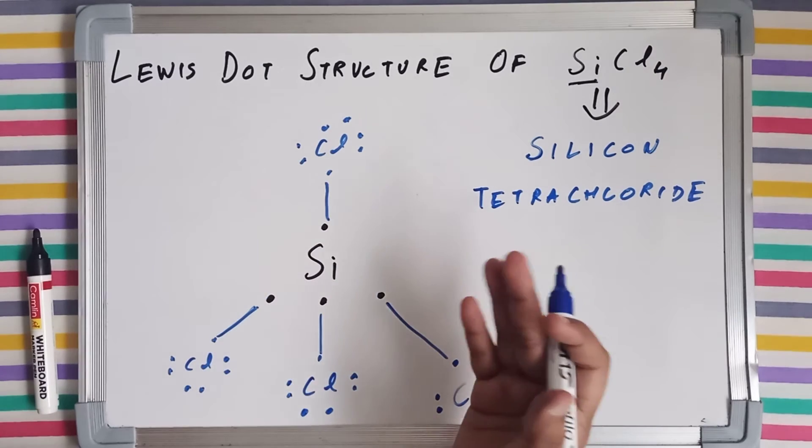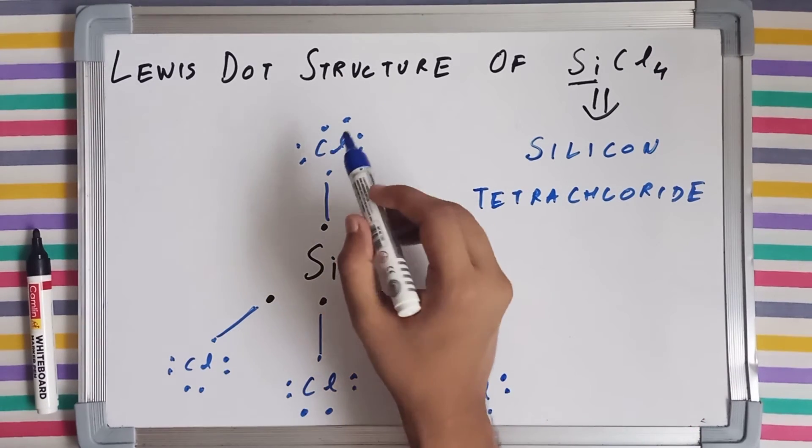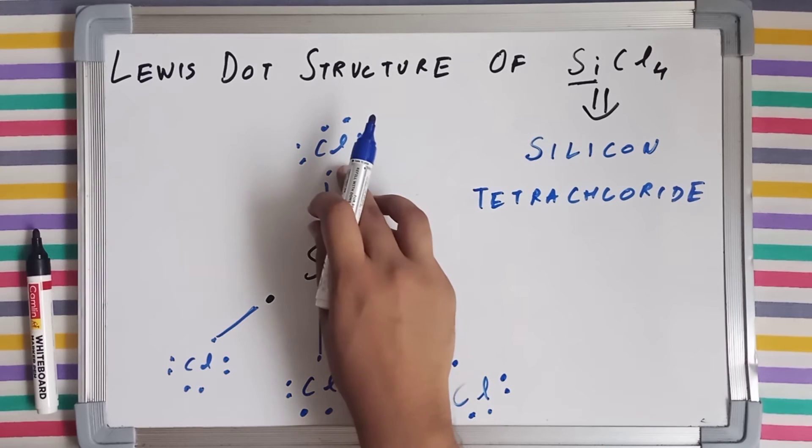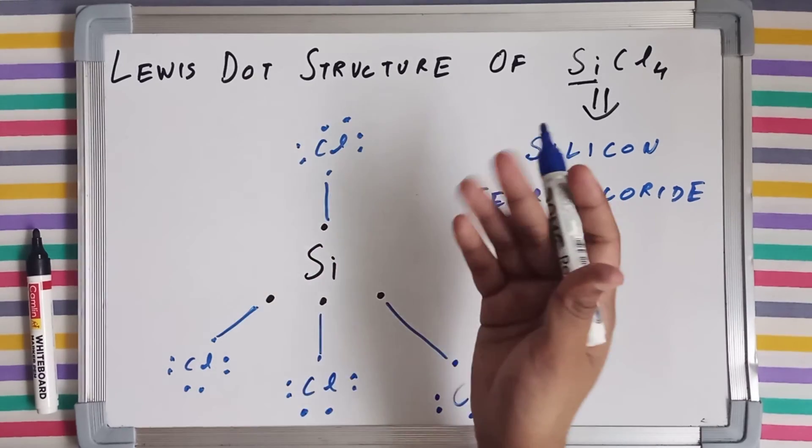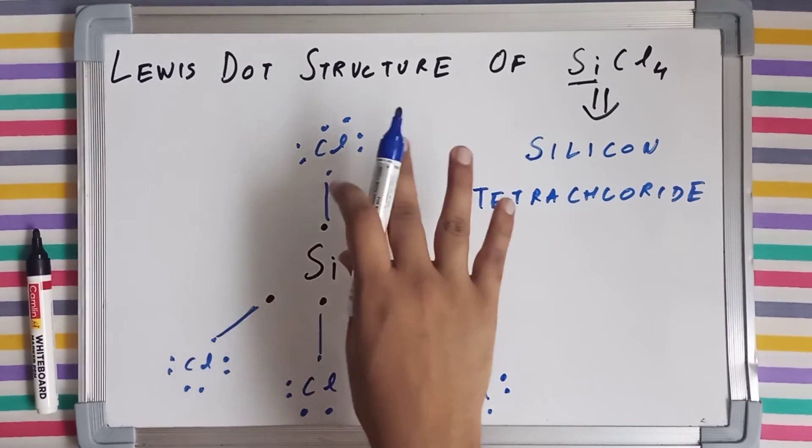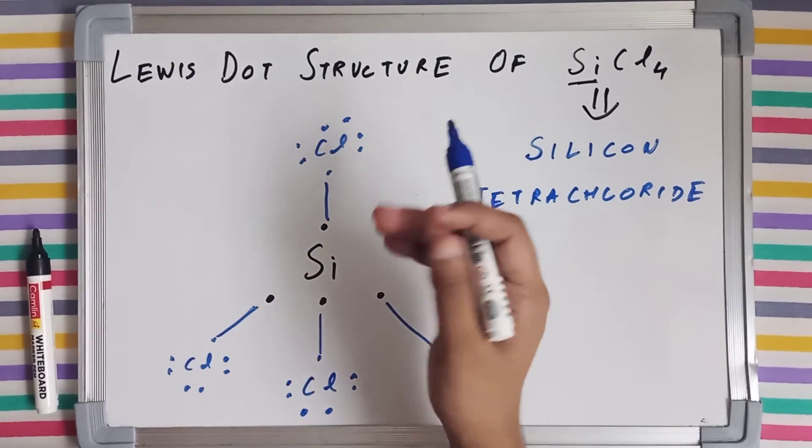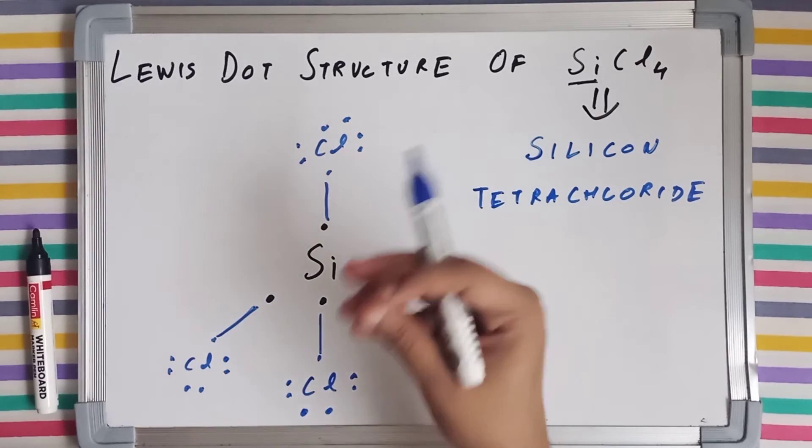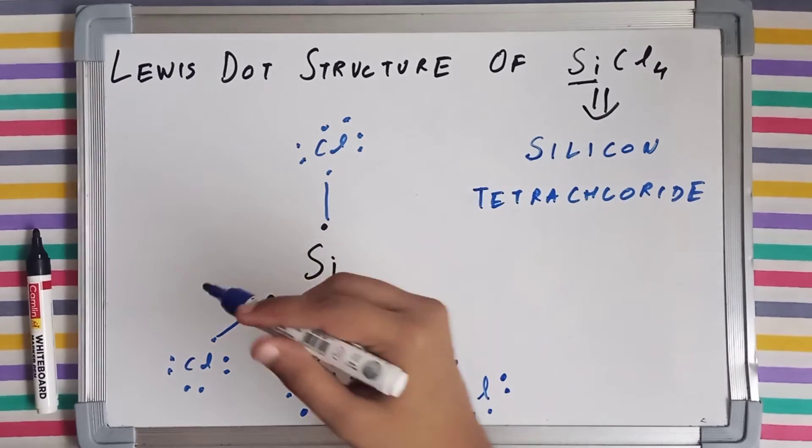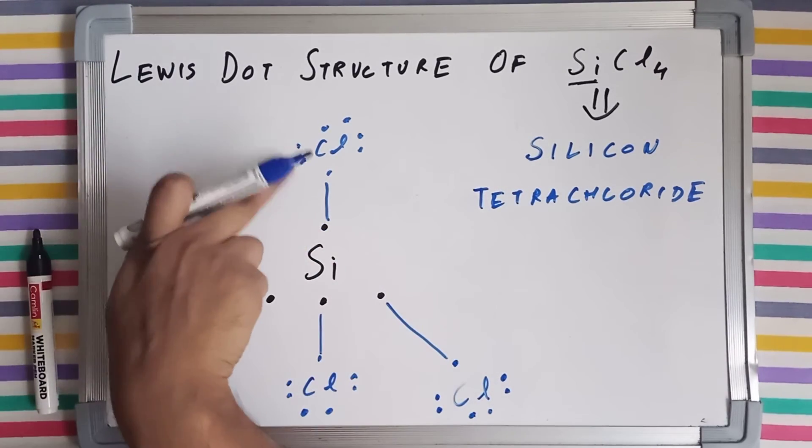Now let's count if they have actually completed their octet or gained stability by completing their respective octets. So let's count the number of valence electrons for chlorine after bond formation. We have bonded all of the atoms present in this molecule. Now let's count the number of valence electrons and check whether they have gained stability, whether they have completed their octet.